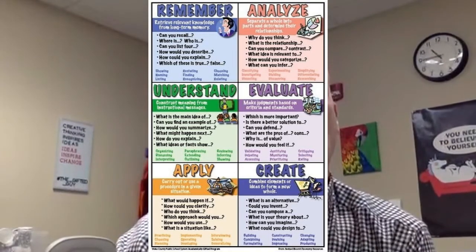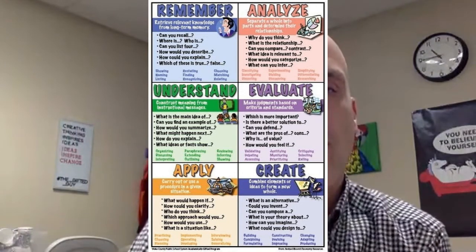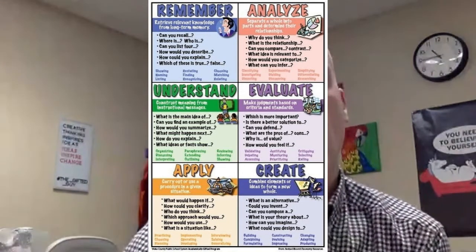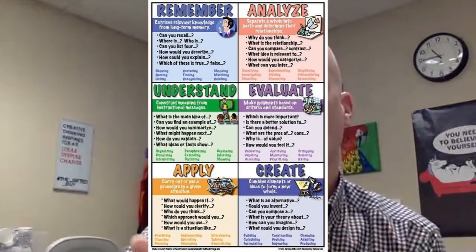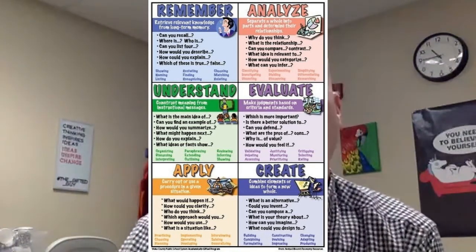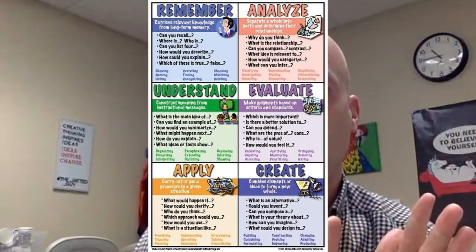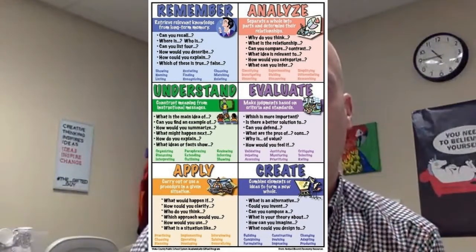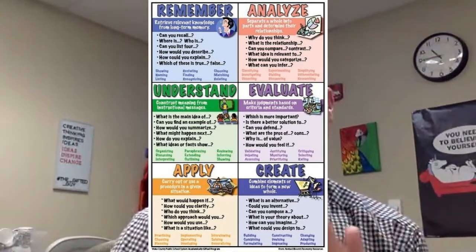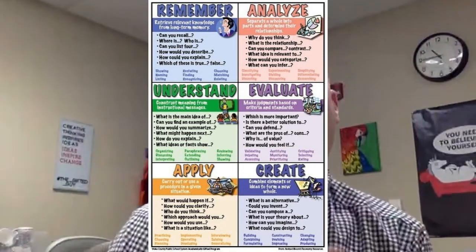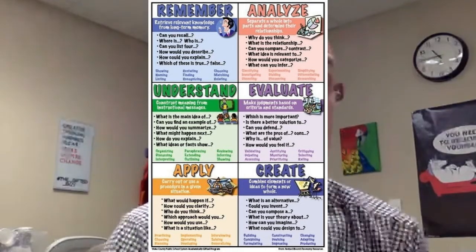You can also apply Bloom's to the questions you ask in class using question stems. For Remembering, a stem might be 'Can you recall...?' or 'How could you explain...?' — they're just recalling what they saw or read. For Analyzing, you'd ask 'Why do you think...?' Lower levels use more what, where, and when questions; higher levels use more why and how, like 'How would you categorize that?' I like to use these stems in discussion and when writing tests.